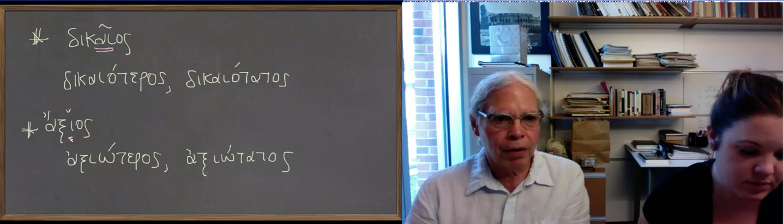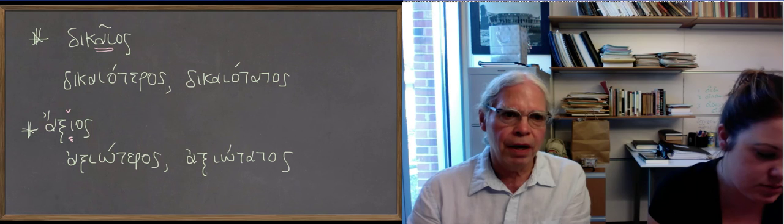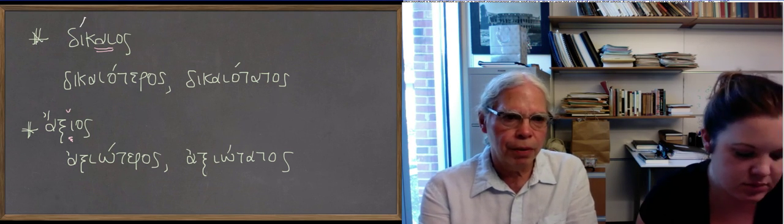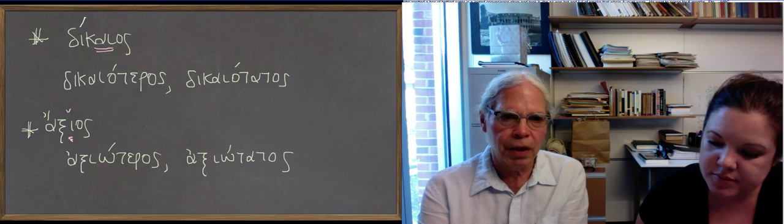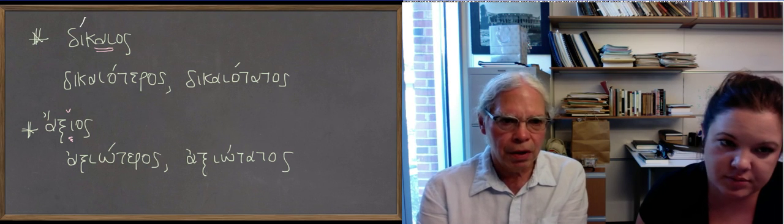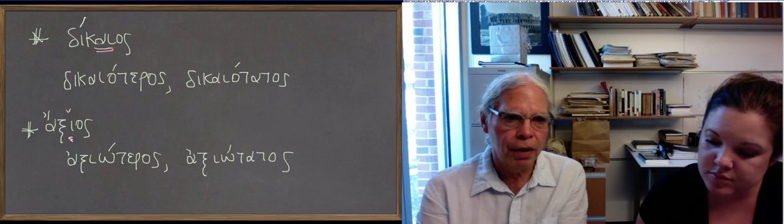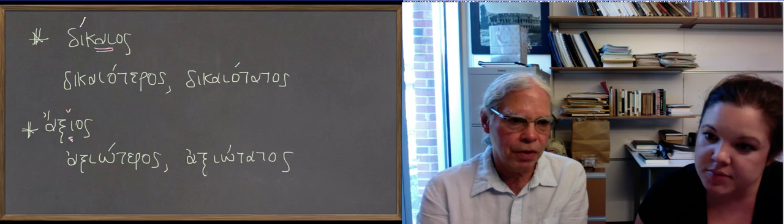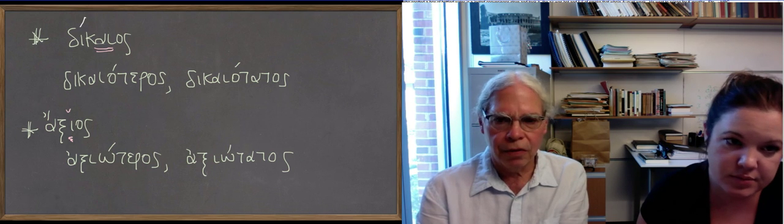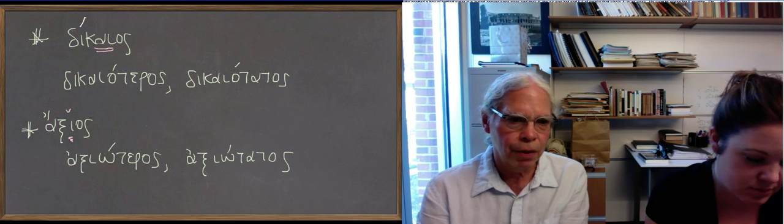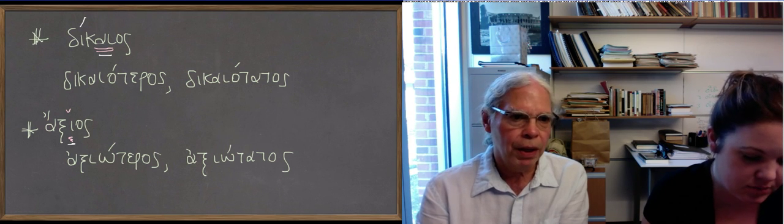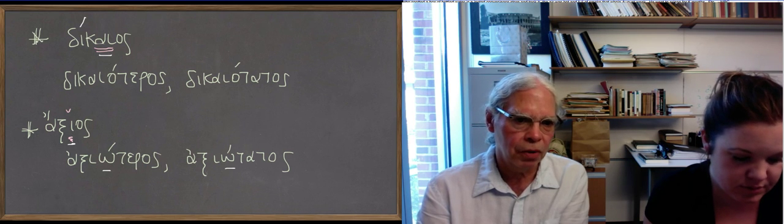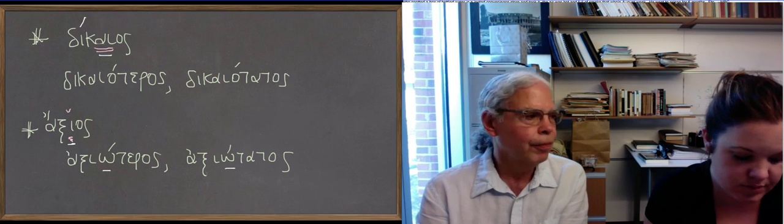So, let's look at a couple of examples. We talked about dikaios. Before the os, you have the alpha iota, which is a diphthong. So, when you make the comparative and superlatives of dikaios, you get dikaioteros and dikaiotatos, with an omicron. If we look at axios, the syllable before the os is i. It's a short vowel. Our book would mark it as long or not. So, there you have an omega. So, the comparative is axioteros and superlative axiotatos. That's the rule.